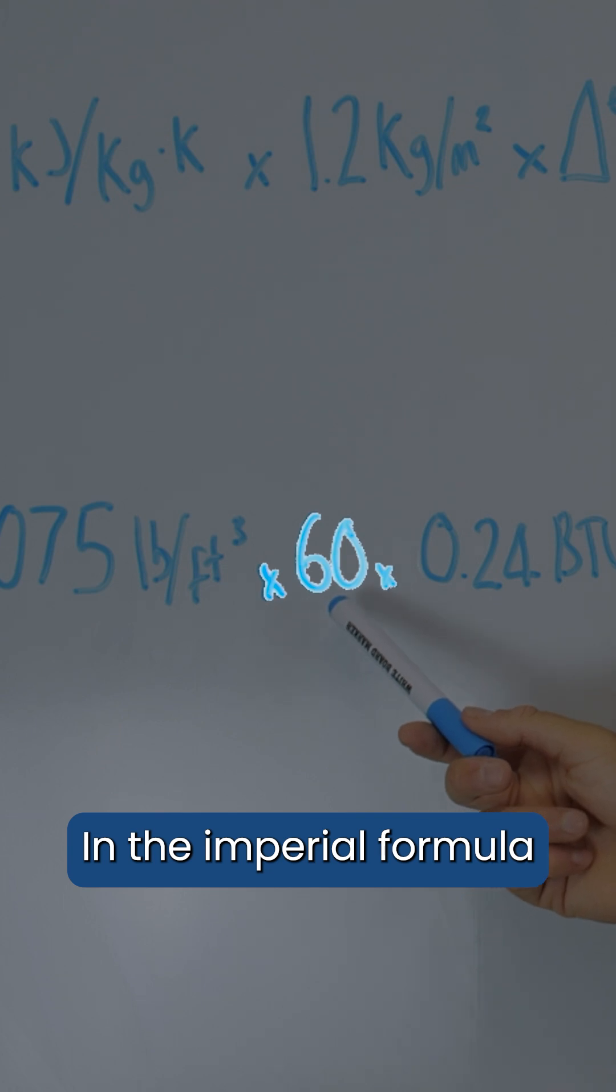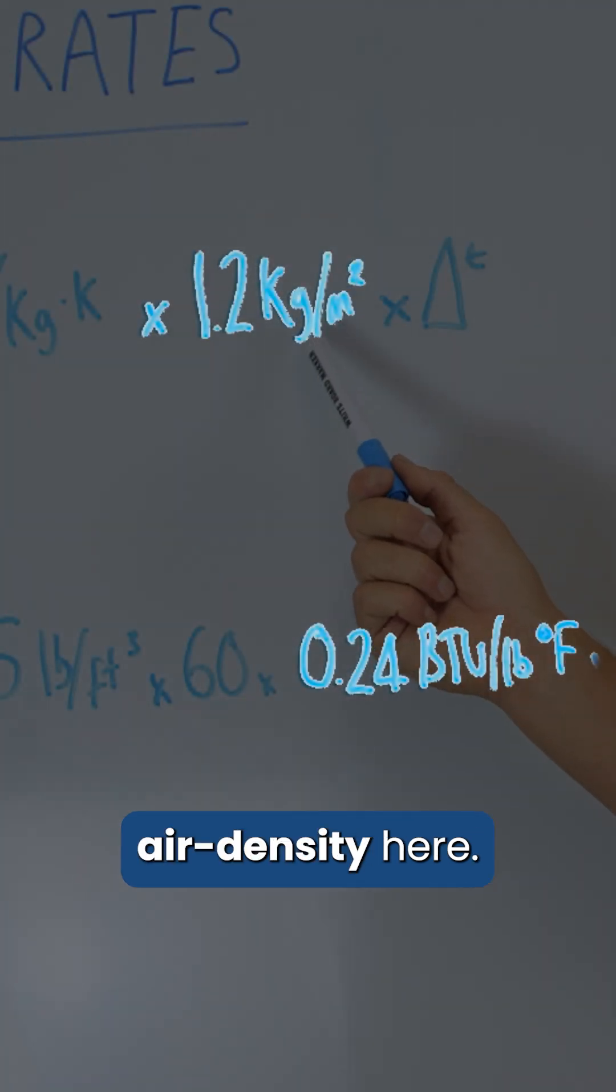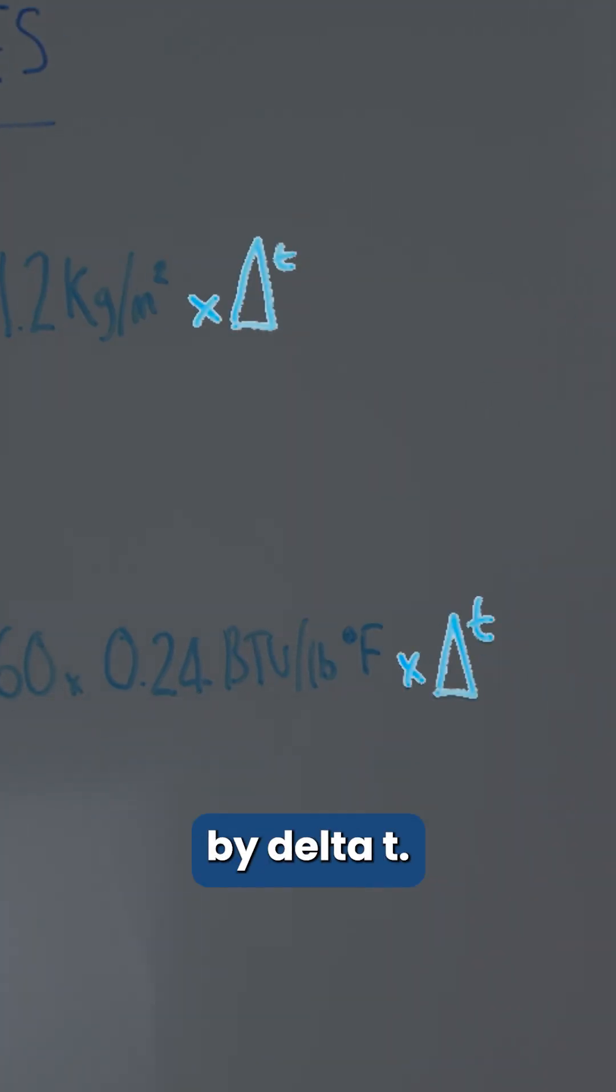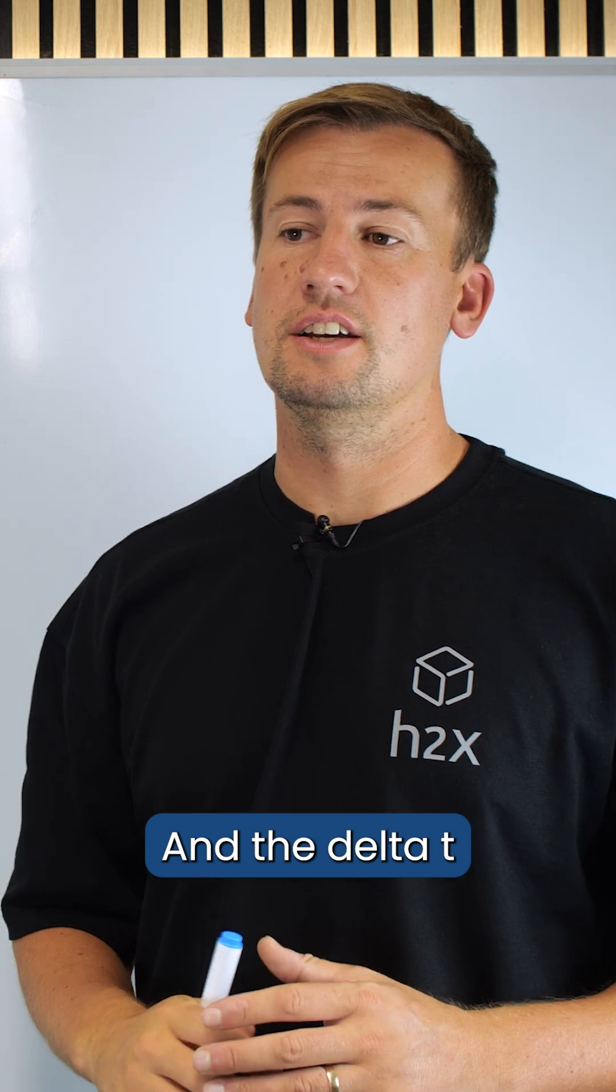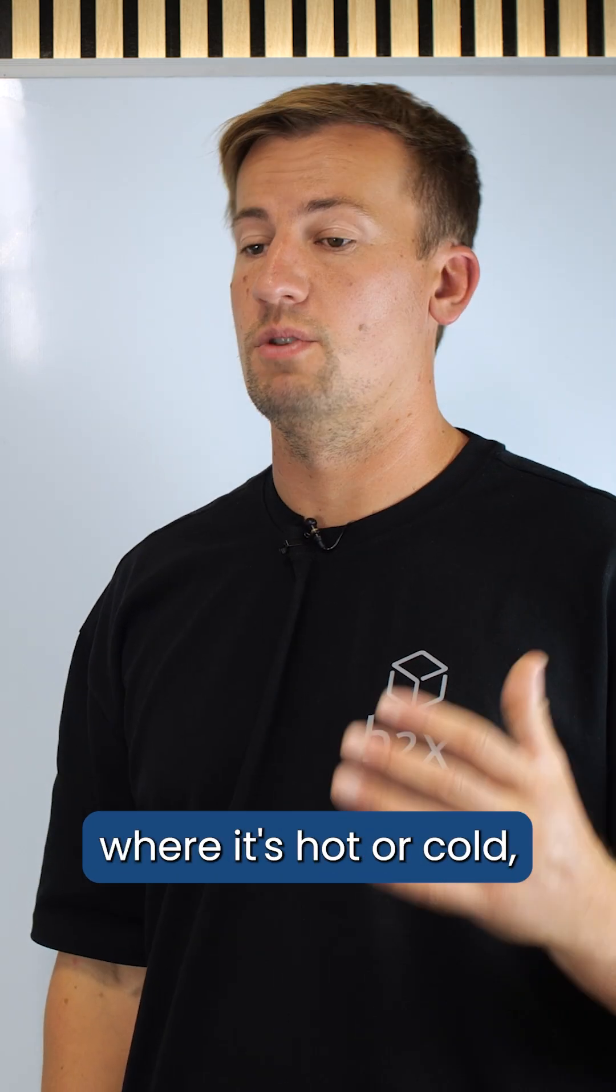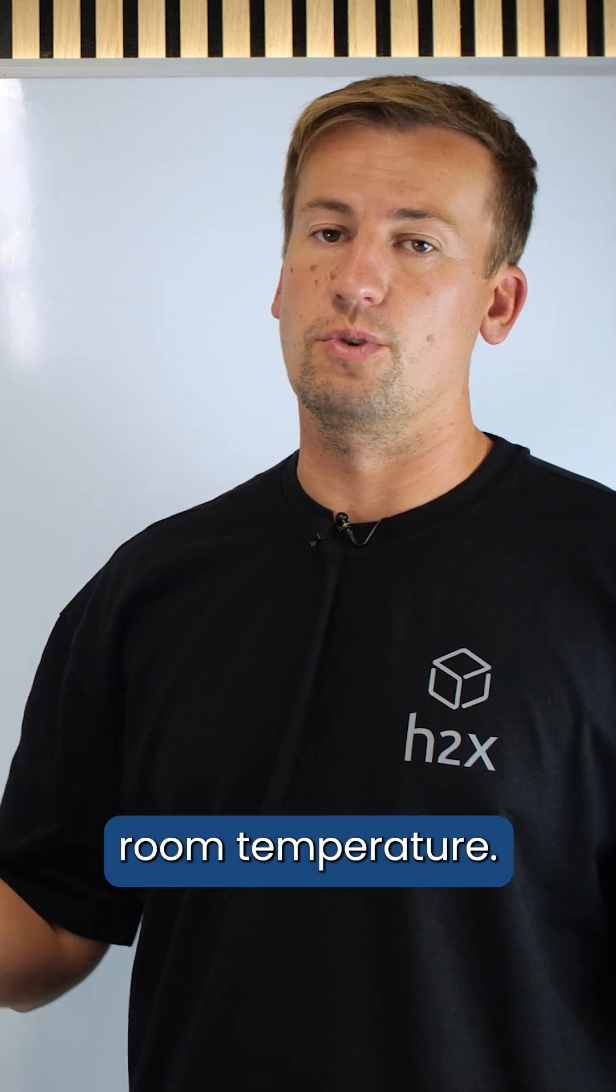In the imperial formula there is a multiplication by 60 to go from minutes to hour that's not in the metric one, and then we have the air density here, and the final part is the multiplication by delta t. And the delta t is the difference between the supply air temperature, whether it's hot or cold, and the room temperature.